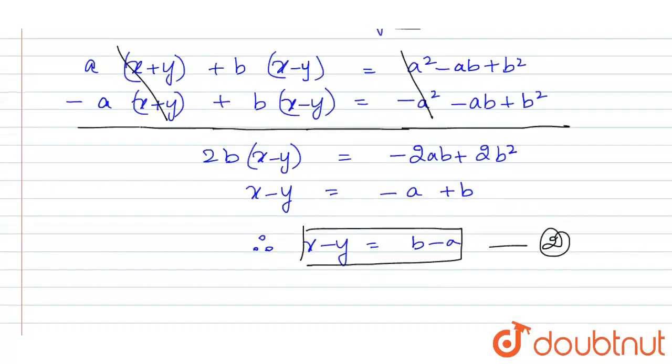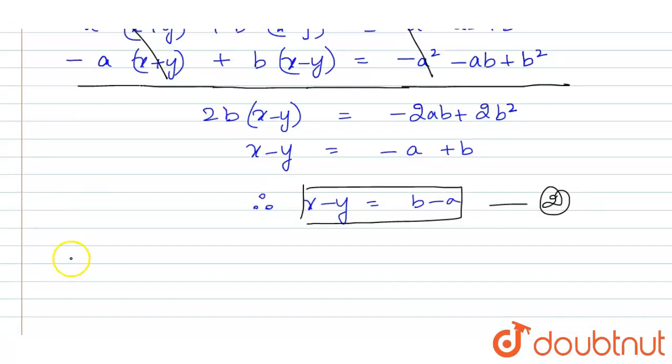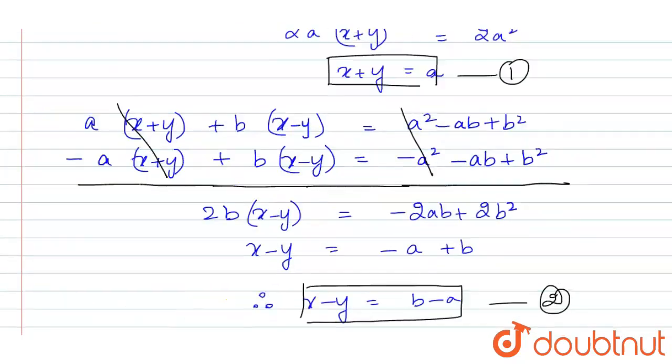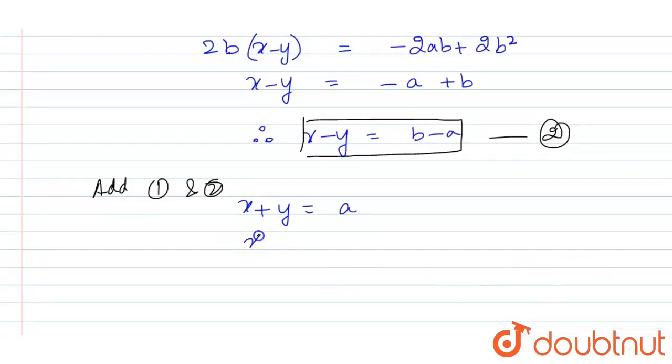We have to just solve it and find the values of x and y. Now add first and second. Let us now add first and second equation. The first equation is x+y = a. This is the first one. And the other one is x-y = -a+b. So now when we are going to add it, first of all, this will be cancelled out, and we will be left with 2x = b. So x = b/2.